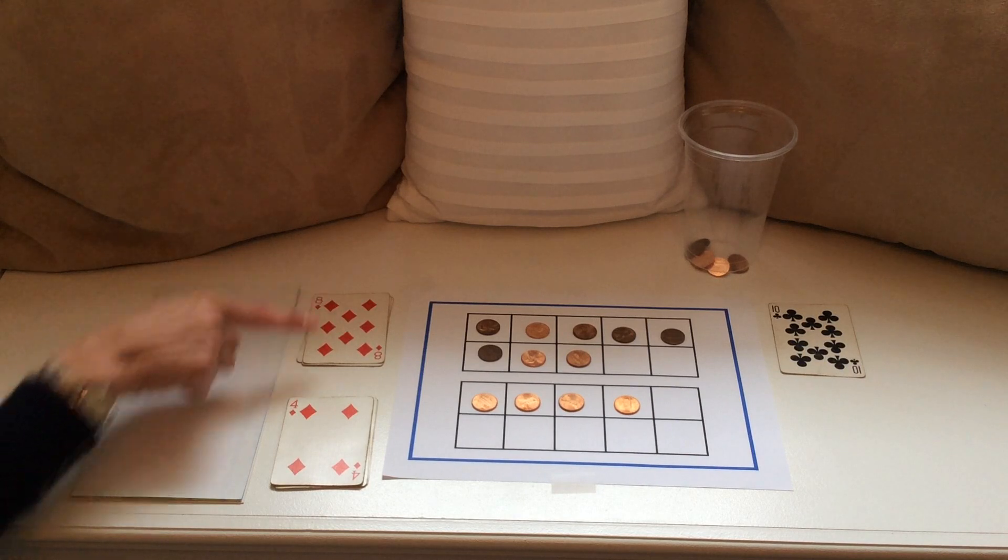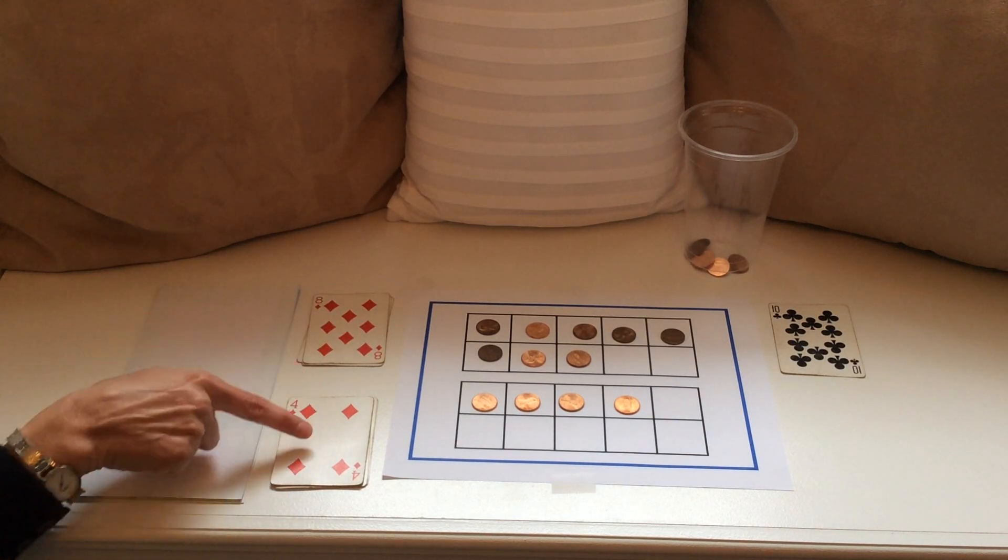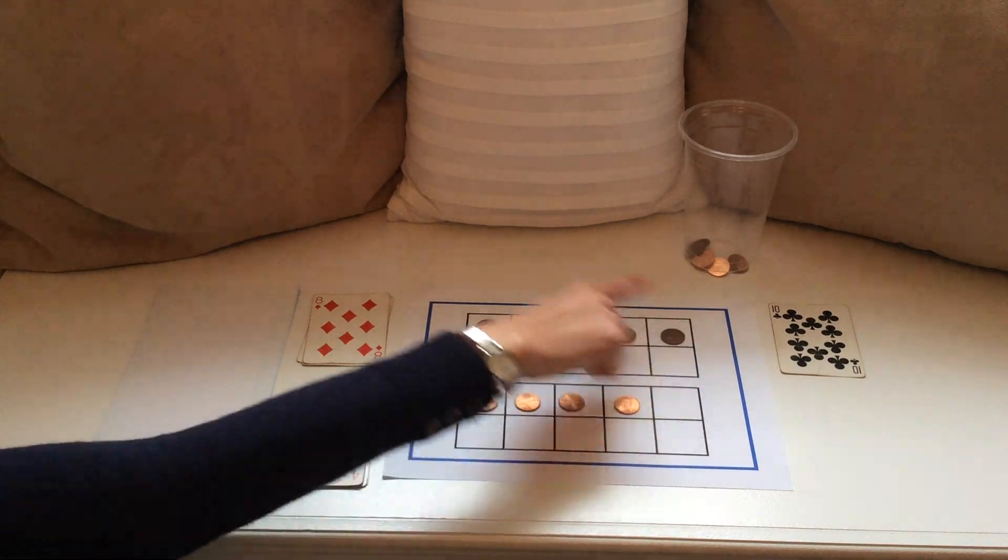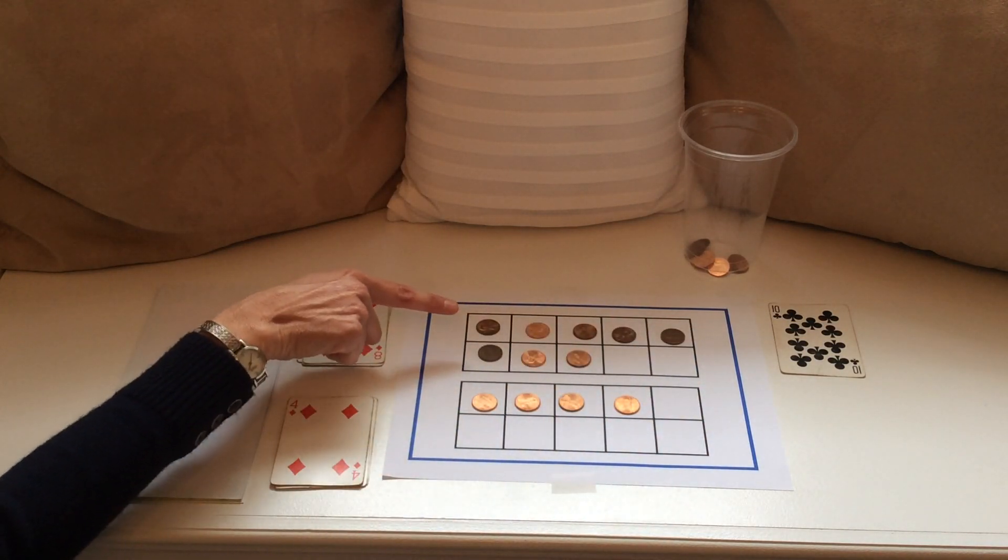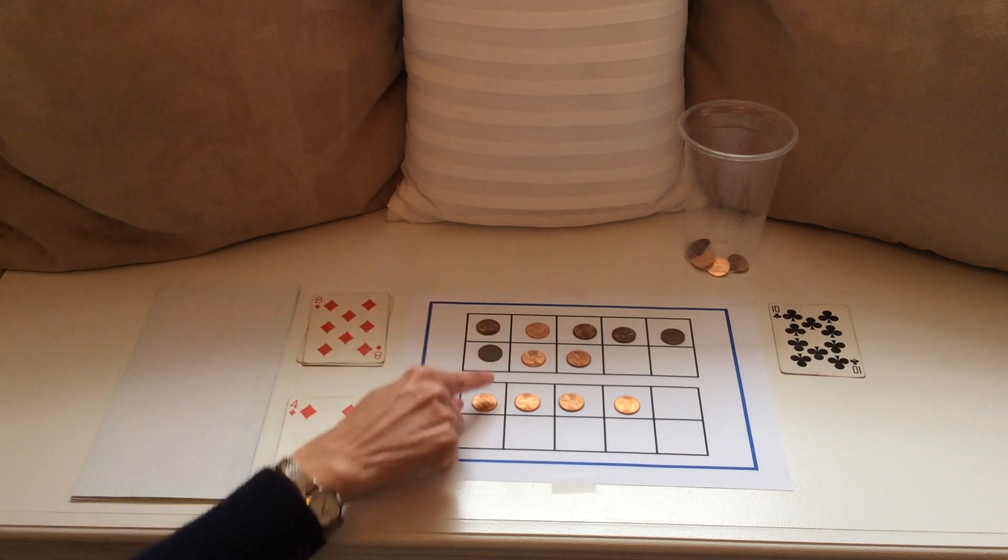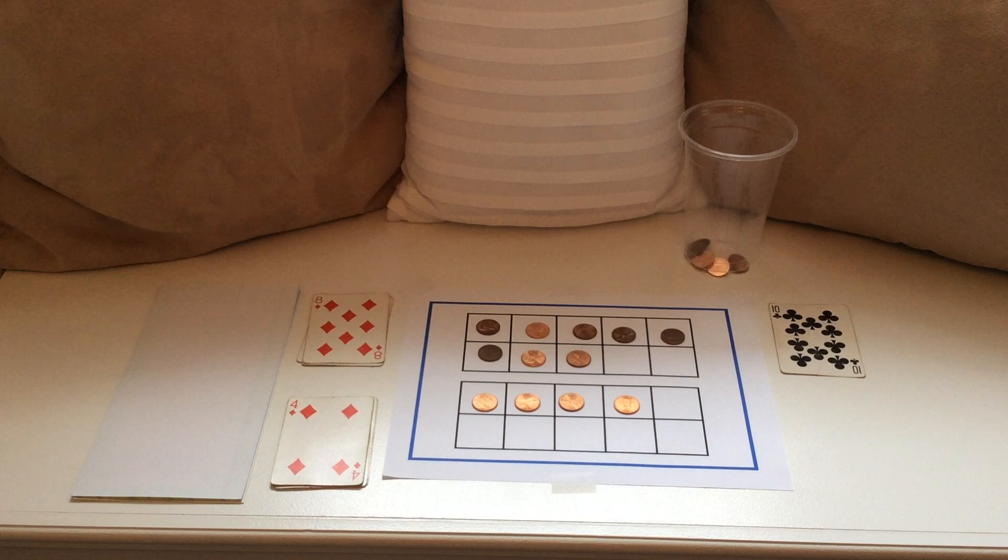I now have this vertical addition sentence that reads 8 plus 4 and I can find the sum by using the picture. I'll count on from 8: 9, 10, 11, 12. The sum of 8 plus 4 is 12.